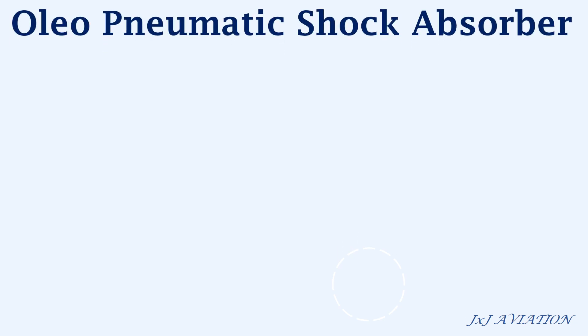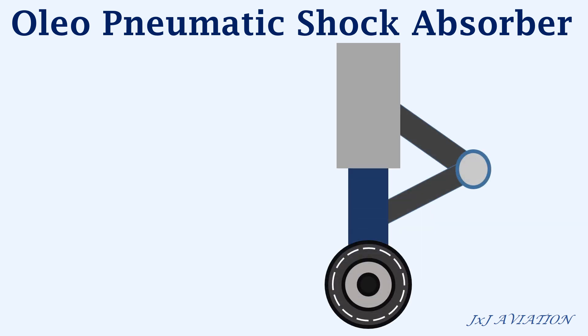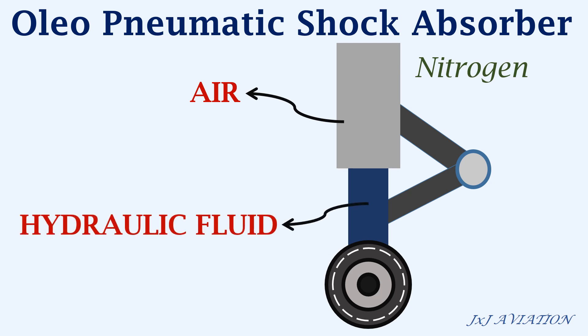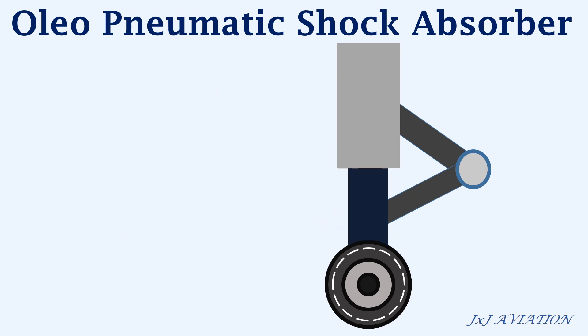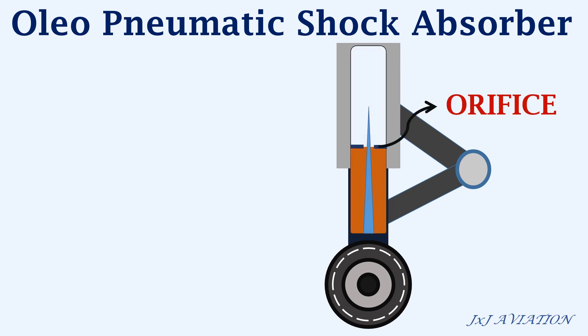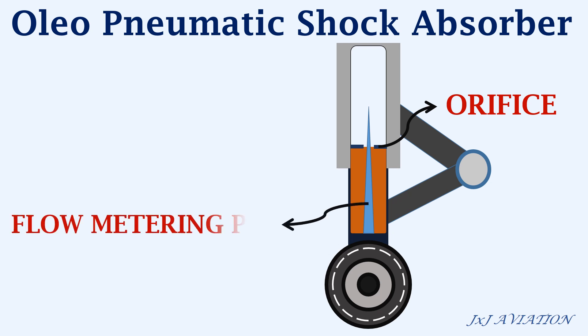The oleo pneumatic shock absorber installed on a landing gear consists of an outer cylinder and an inner cylinder. The outer cylinder is filled with air such as nitrogen, and the inner cylinder is filled with a hydraulic fluid such as oil. Inside the cylinders, there is an orifice which separates the air from the hydraulic fluid, and a flow metering pin which regulates the flow of hydraulic fluid into the outer cylinder.